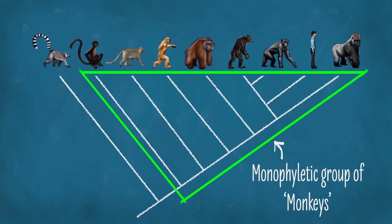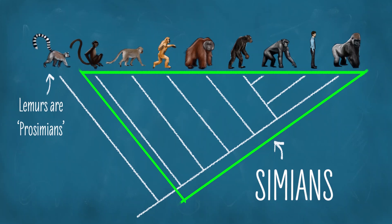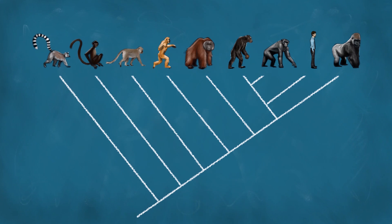This is why, if we want to make a monophyletic group for all of the monkeys, the apes would need to be a part of it. That group is actually called the simians, so they are all simians, and 'monkey' is a paraphyletic group.